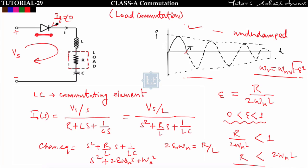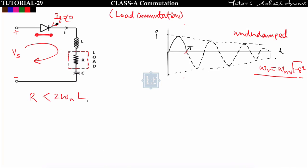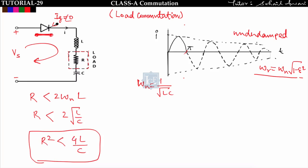From the equation R < 2ωₙL, substituting ωₙ = 1/√(LC), we get R < 2√(L/C). Squaring both sides: R² < 4L/C. So to make the system under-damped, ζ must be less than 1, and the condition is R² < 4L/C. By choosing proper values of L and C — the commutating elements — we can ensure R² < 4L/C and obtain an under-damped current response.